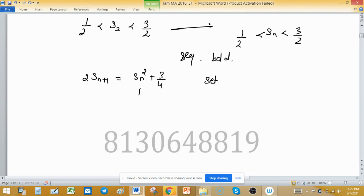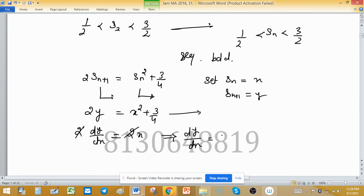Set this as input and this as output. Set SN as X and SN plus 1 as Y. It will be 2Y equal to X square plus 3 by 4. Differentiate this equation with respect to X. 2 times DY upon DX equal to 2X.